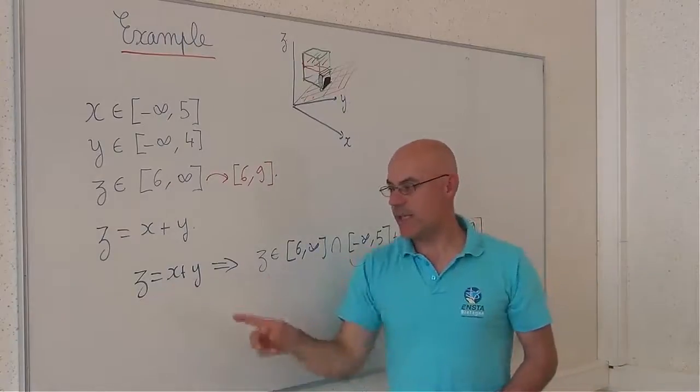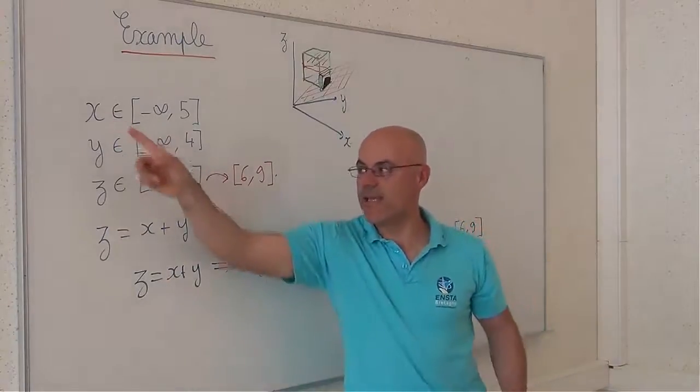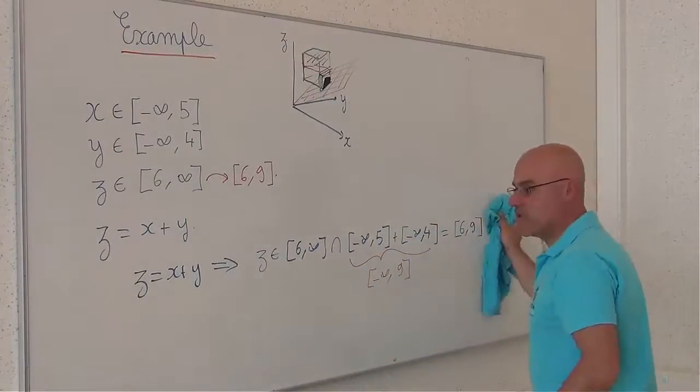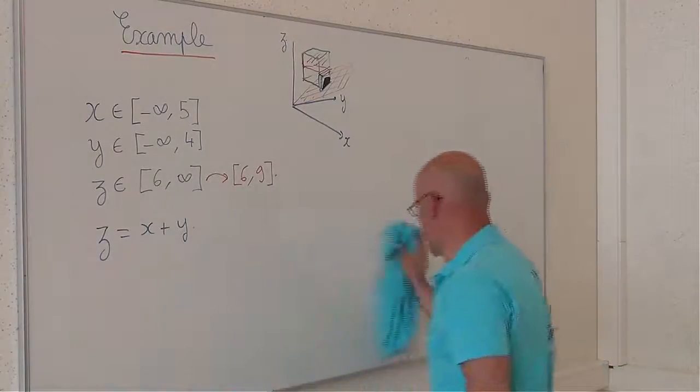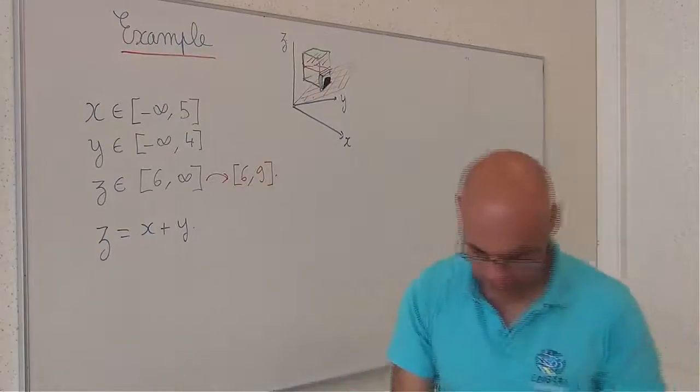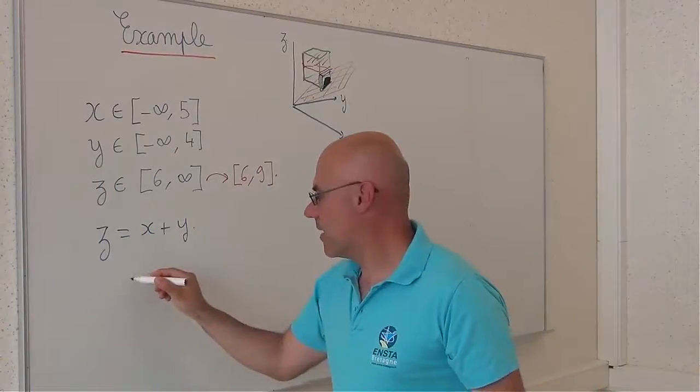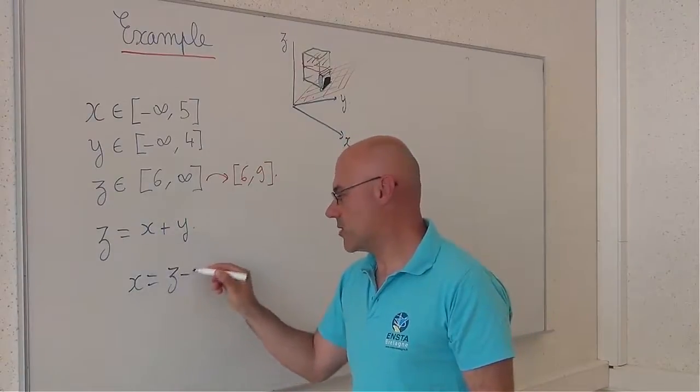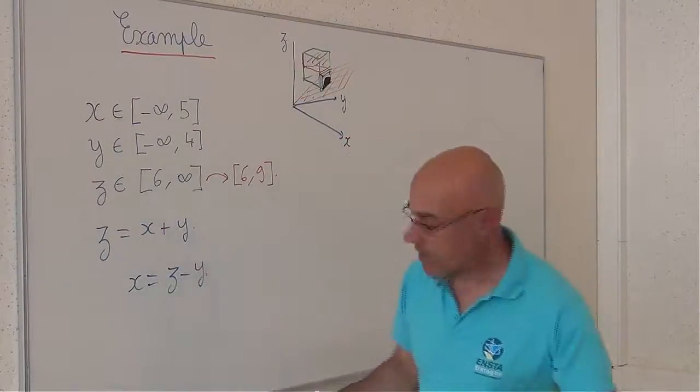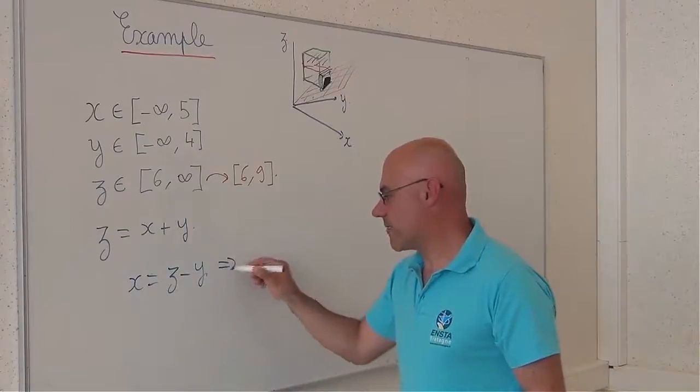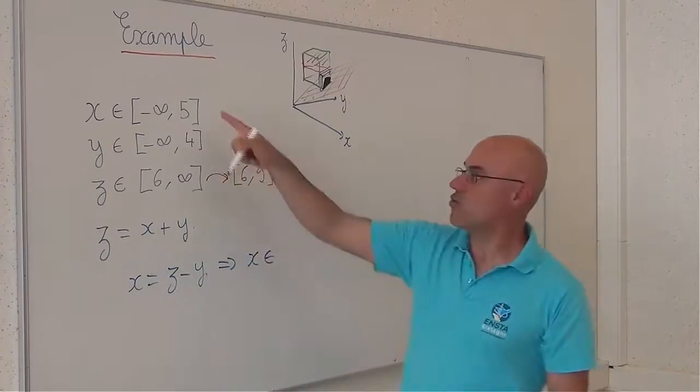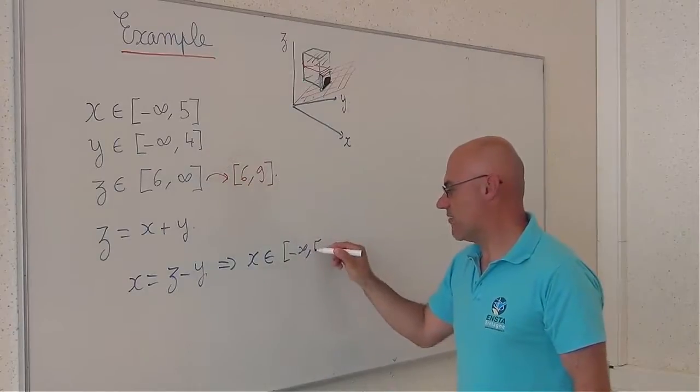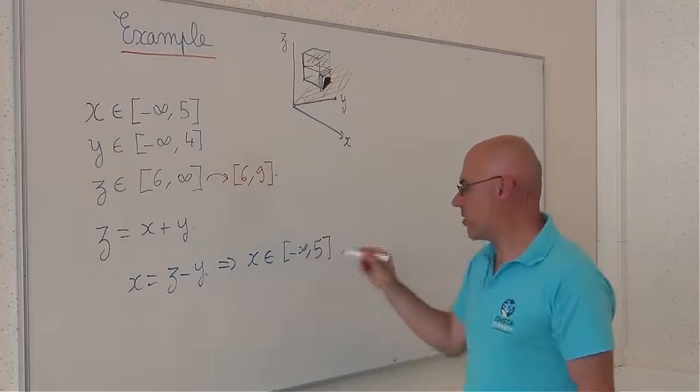What I have done for z, I will have to do also for x and y. So let me do it for x. x is equal to z minus y. It means that x belongs first to the previous domain, minus infinity, 5. But also to the domain for z.